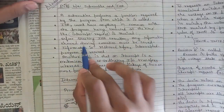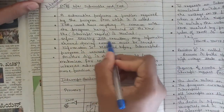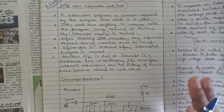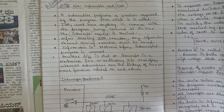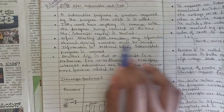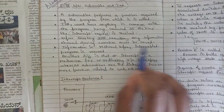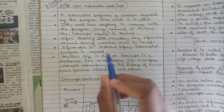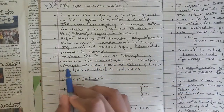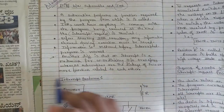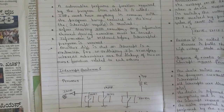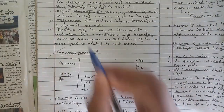Before starting ISR execution, any information needed during execution must be saved. The information is restored before the interrupted program is resumed. Another difference: an interrupt is a mechanism for coordinating input/output transfers, whereas subroutines are the linkage of two or more functions. This is one main difference between a subroutine and an ISR — this question is fixed and repeated multiple times.